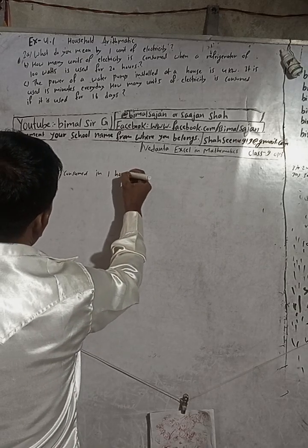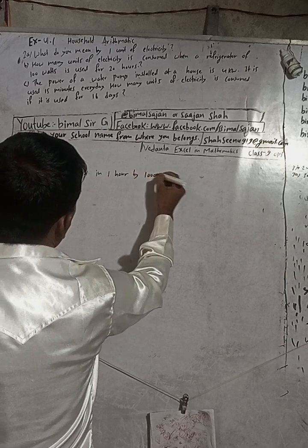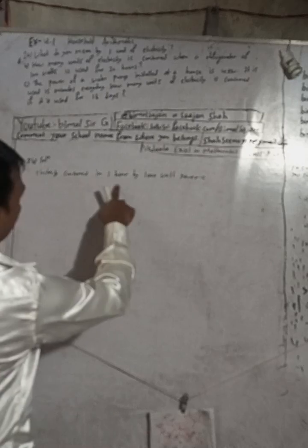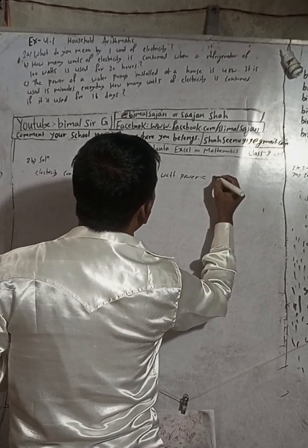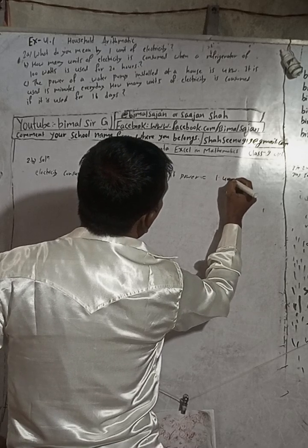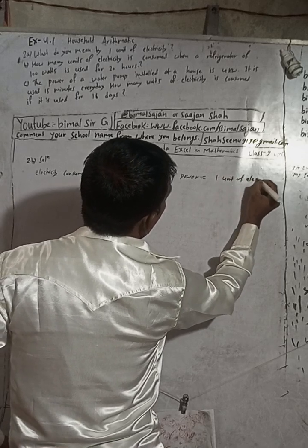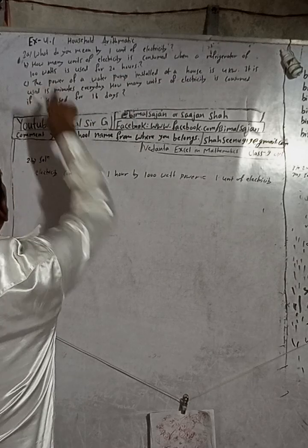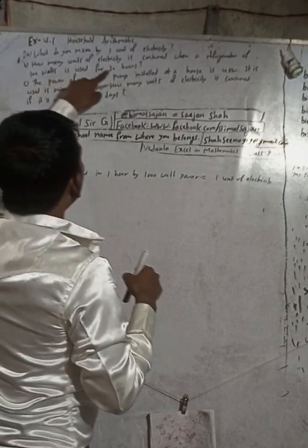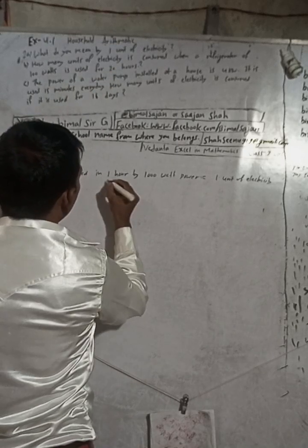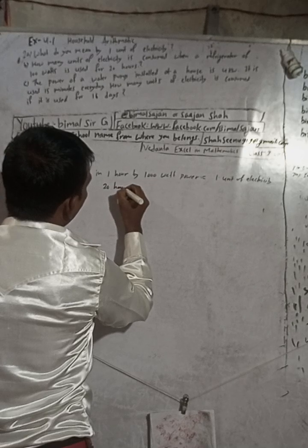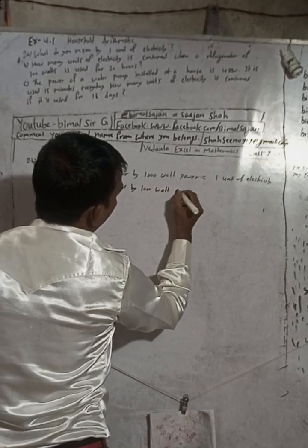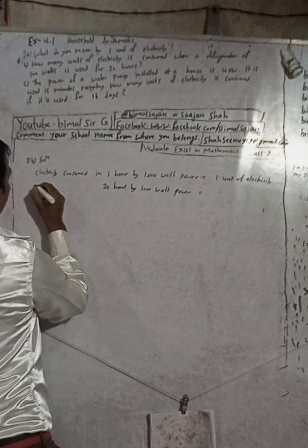In one hour by 1000 watt power is equal to how much unit? This is going to be equal to one unit of electricity. Then we have to find for 100 watts and 20 hours. So for 20 hours we'll be working, this is now in place of 20 hours, by 1000 watt power.